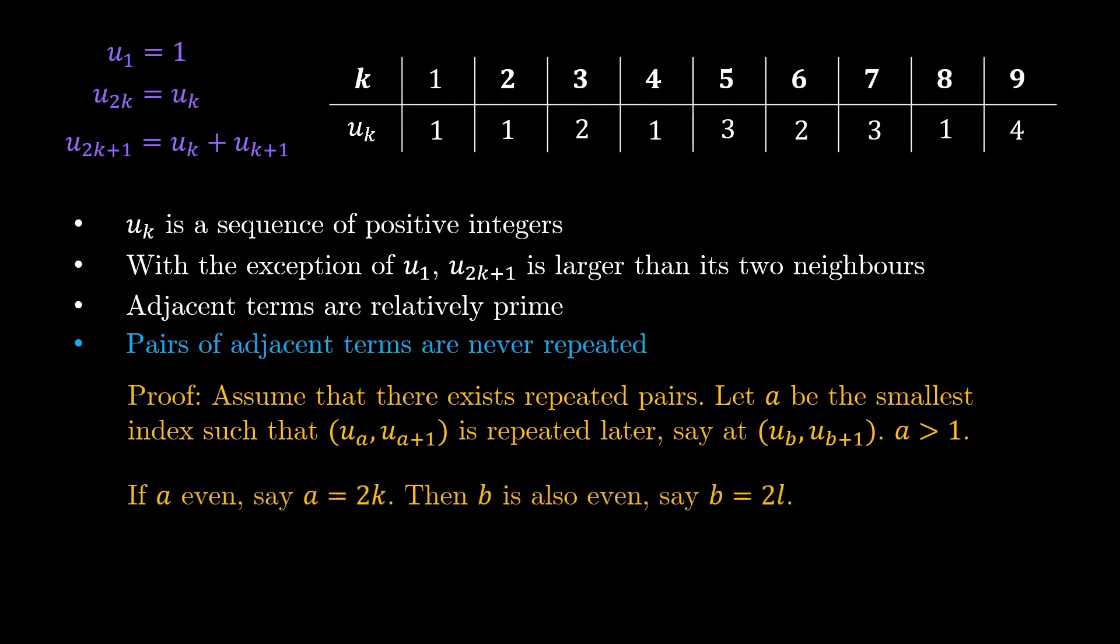Same thing, consider what happens if a is even. Then actually ua+1 being the term with odd index will be bigger than ua. So ub+1 is bigger than ub. And again by the second statement, we can conclude that ub must be the term with even index. So a even implies b is also even.